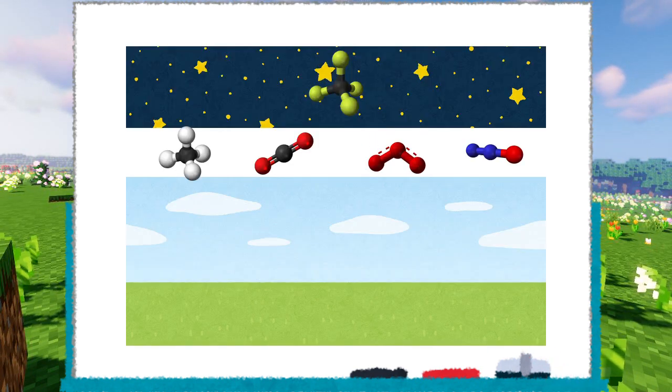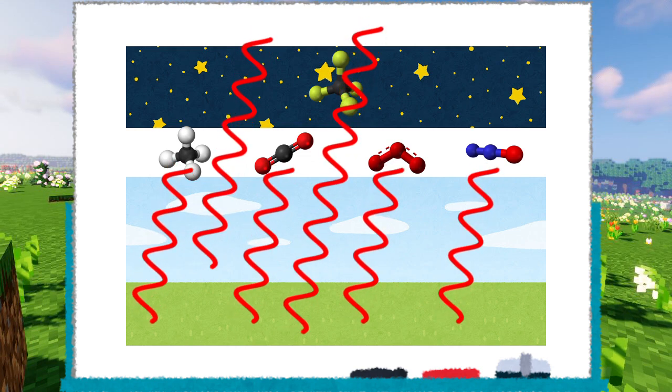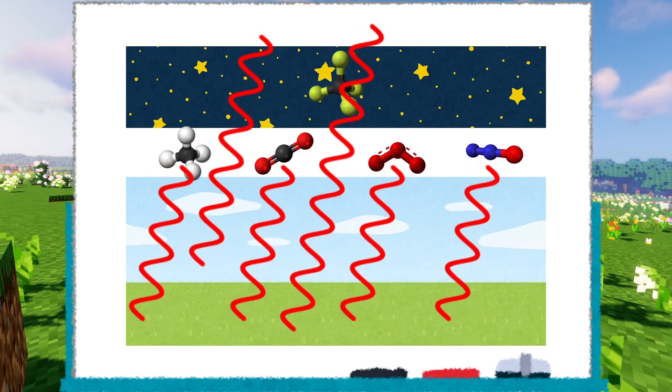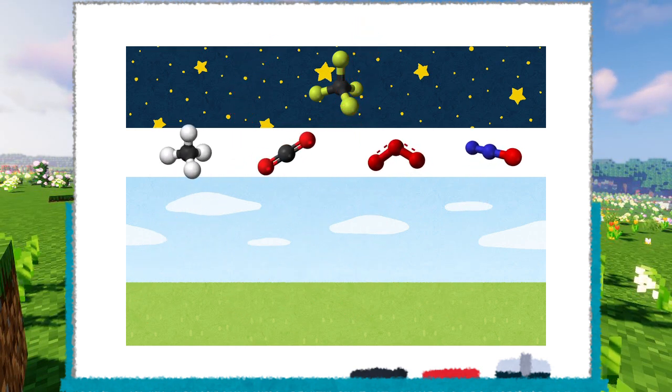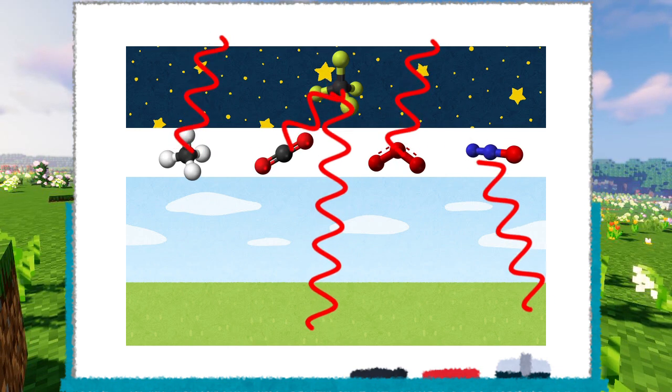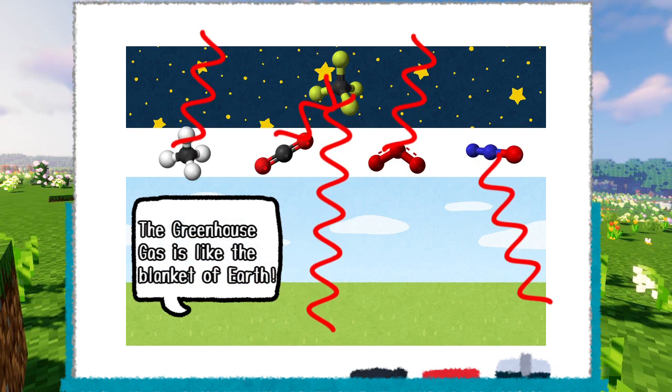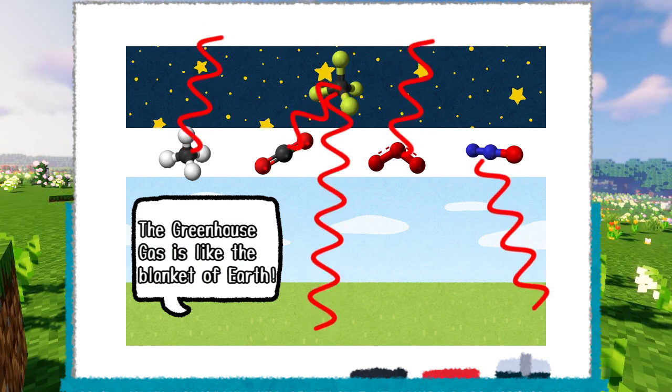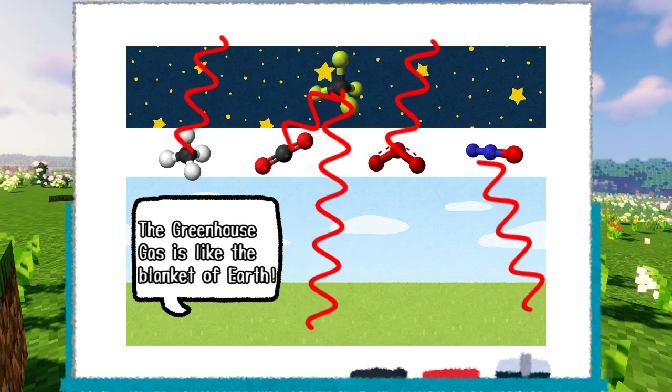Because it absorbs infrared radiation, when Earth loses heat and releases infrared via thermal radiation, greenhouse gas absorbs that and releases half to outer space and another half back to Earth. Greenhouse gas stands in the way of Earth's thermal radiation, so the Earth doesn't get too cold.